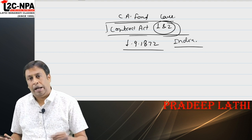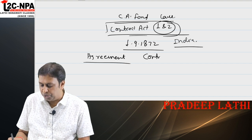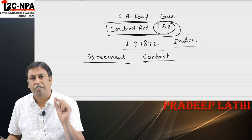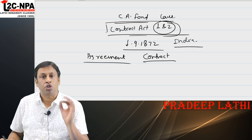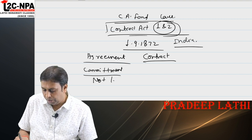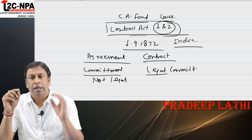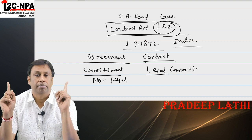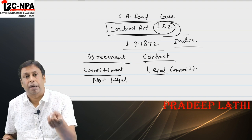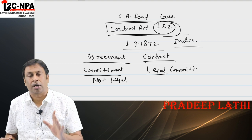If we talk about the contract, what is a contract? In routine usage you use two words: agreement and contract. Agreement means a commitment, but this commitment is not legally enforceable. Contract means a commitment which is legal — one to which you are legally bound. If a contract is not performed, you can take legal action against the other party. But if an agreement is not performed, you cannot take legal action.